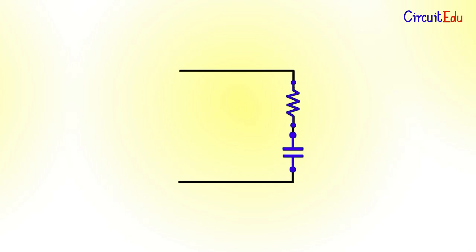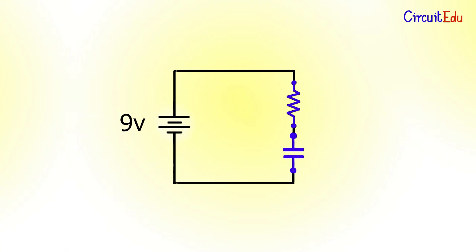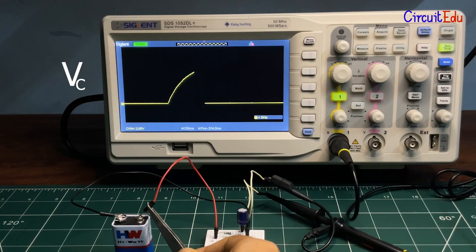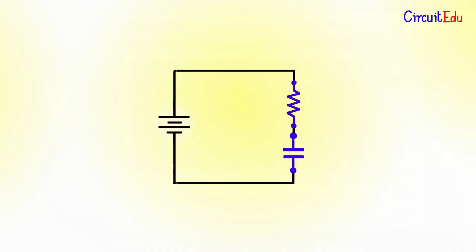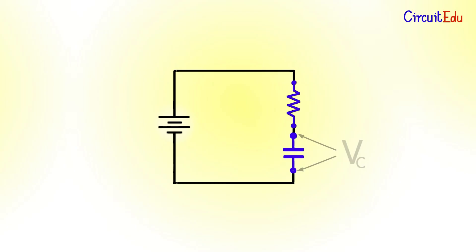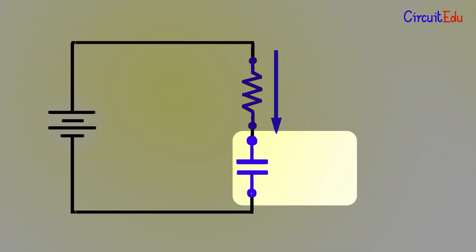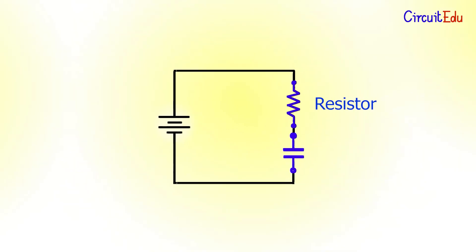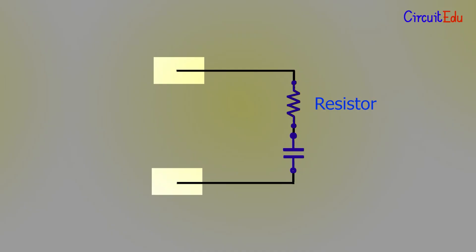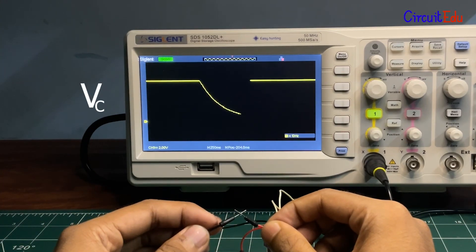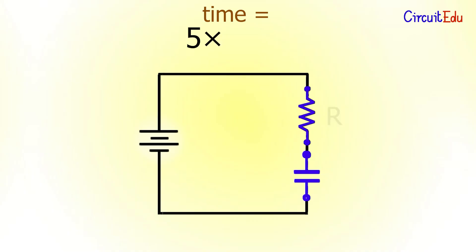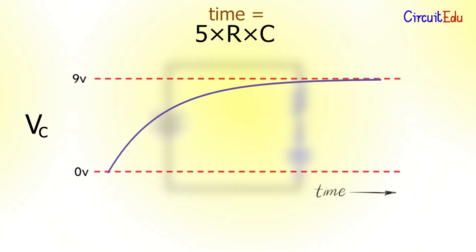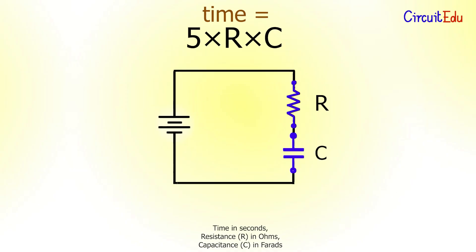Now let's try connecting a resistor in series with the capacitor and then connect it to the voltage source. This time, voltage across the capacitor does not increase instantly. After some time it reaches the supplied voltage, that is 9V. The reason voltage rises slowly is because the resistor resists the flow of charge, and due to this, voltage buildup across the capacitor becomes slower. The capacitor can also be discharged by using the same resistor — just connect it in parallel by shorting those two points, and the capacitor discharges slowly. It takes approximately 5RC to completely charge or completely discharge a capacitor.